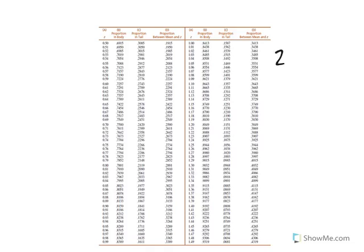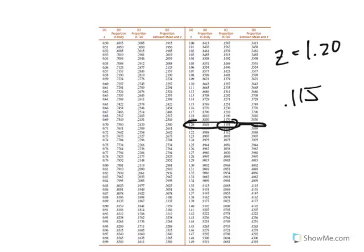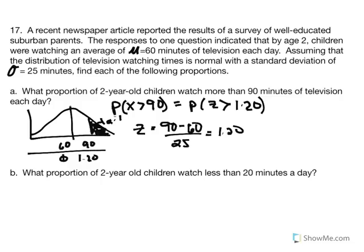Entering the table with Z score 1.20 and reporting the tail, the proportion of the tail is 0.1151. So the probability of selecting a 2-year-old from the population who watches more than 90 minutes of television per day is 0.1151 — an 11.51% chance. That is the proportion of 2-year-olds watching more than 90 minutes per day.